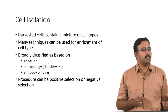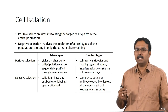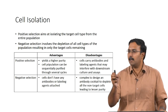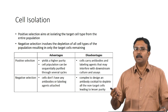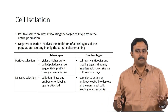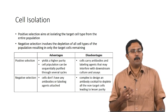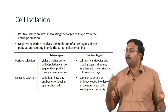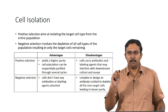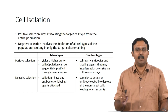The procedure can be either positive selection or negative selection. In positive selection, you isolate the target cell type from the entire population — you might have 8 or 10 cell types and you target one and take that out of the mixture. The advantage of positive selection is high purity because you have targeted one specific cell type using a unique property, so it is going to be highly pure.